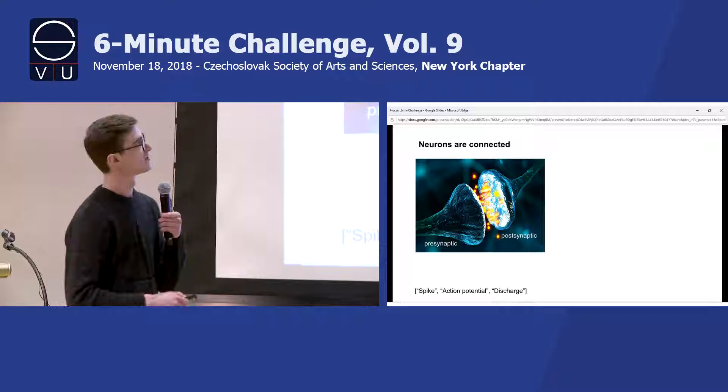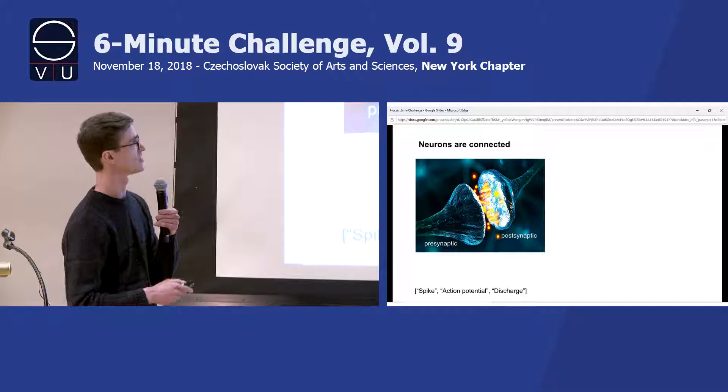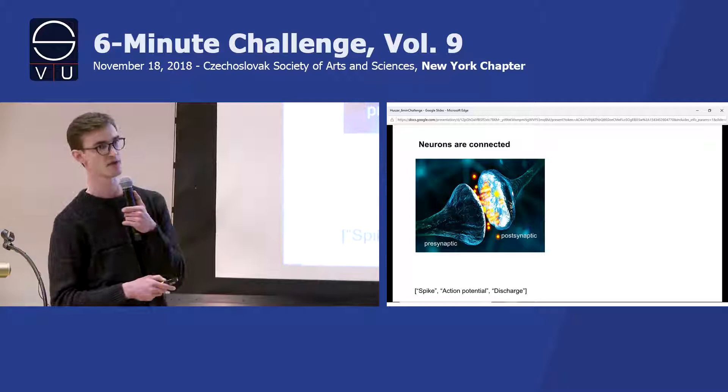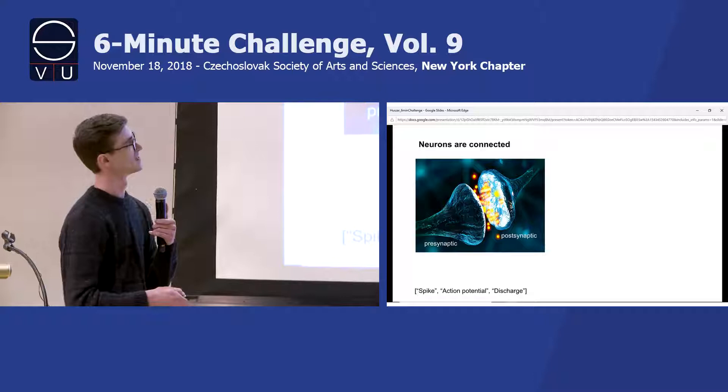Neurons are also connected. Here I'm showing you an image of two neurons and the junction between them via which these cells can communicate — that's called a synapse. What I'm showing you here is this pre-synaptic neuron that's signaling information through the synapse onto its post-synaptic partner. That's just some neuroscience lingo: pre-synaptic, post-synaptic.